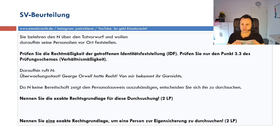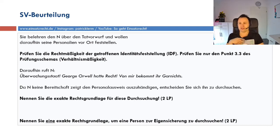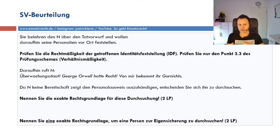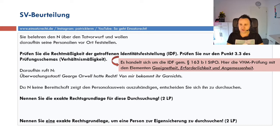Das bedeutet, §23 BPolG schließen wir aus – der wäre hier falsch und würde null Punkte geben. Ich kann nur repressiv handeln bei abgeschlossenen Rechtsgutverletzungen. Ich gehe in die StPO, die meine repressiven Maßnahmen umfasst. Ich soll nicht die Voraussetzungen der IDF prüfen, sondern nur auf den Verhältnismäßigkeitsgrundsatz eingehen – also keine TBM-Struktur, kein Tatverdacht und so weiter, nur Verhältnismäßigkeit.